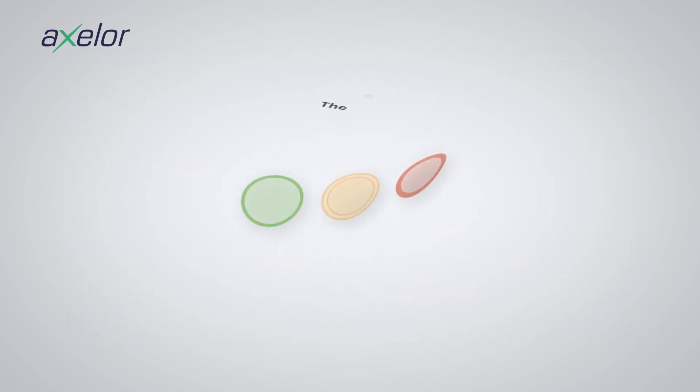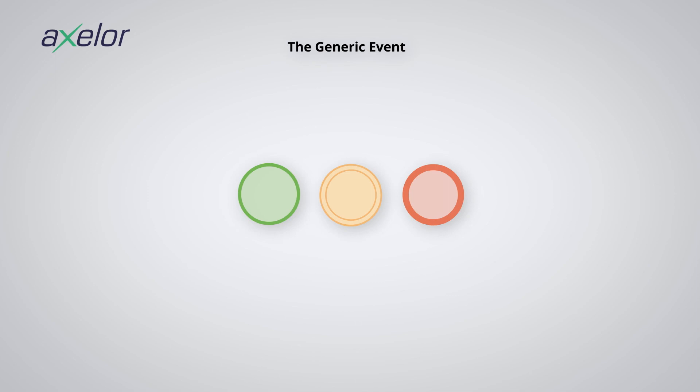Generic events. These are non-specific events; they do not have pictograms. As we have seen, this category of events can be found in the three categories mentioned — that is to say, the beginning, the intermediate, and the end.